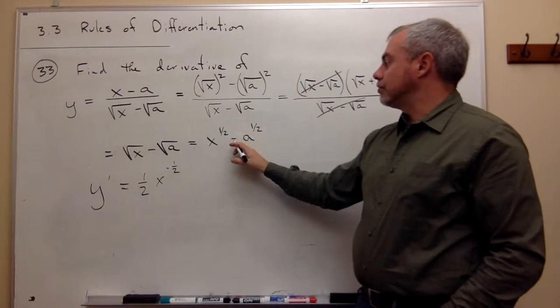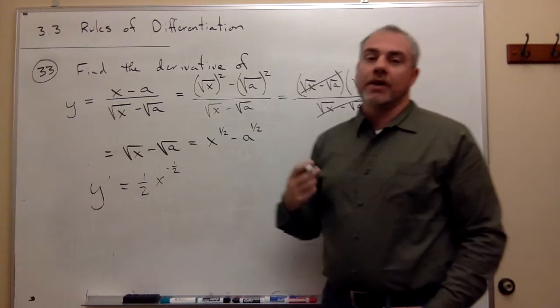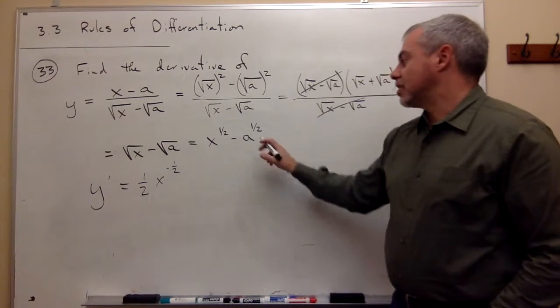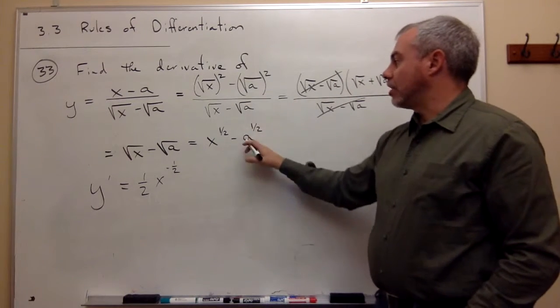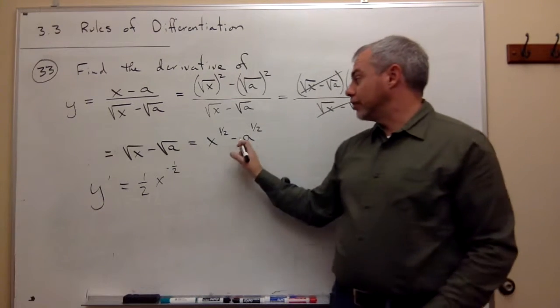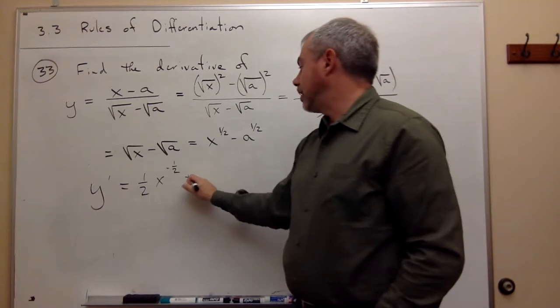And then I need to take the derivative of negative a to the 1 half power. But a is just a constant. Since a is a constant, the derivative of a constant, even if it's raised to a power, is still 0. So the derivative of negative a to the 1 half is 0.